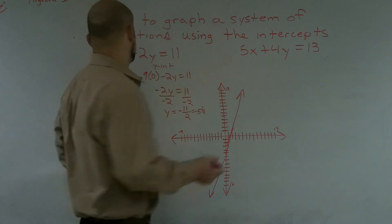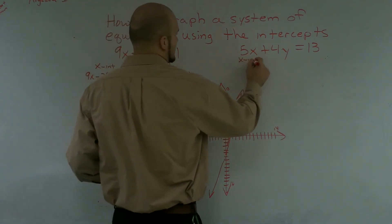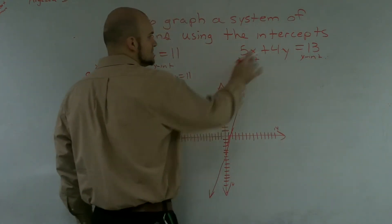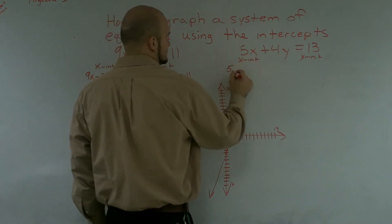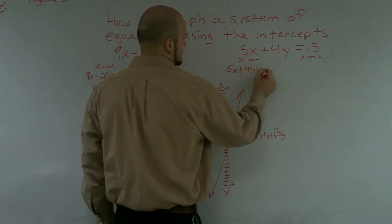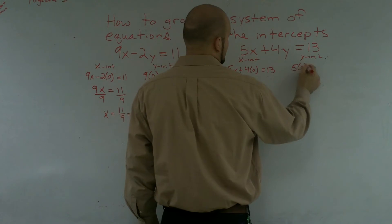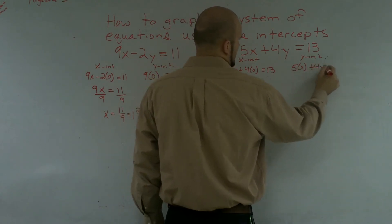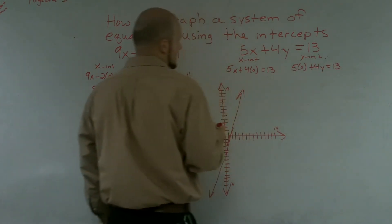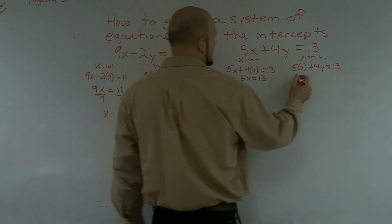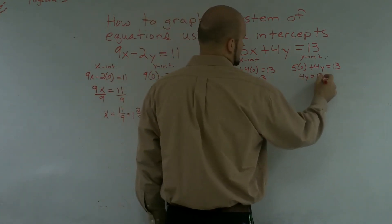Then for here, you're going to do the same process, x-intercept, y-intercept. For the x-intercept, our y equals 0. And for our y-intercept, our x equals 0. Over here, we have 5x equals 13. Over here, we have 4y equals 13.